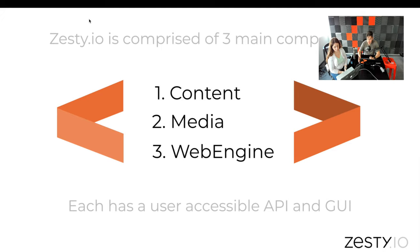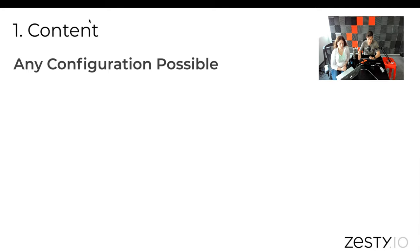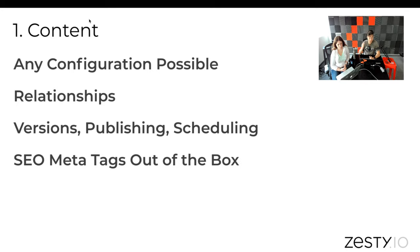Each of these has an accessible API to developers and a graphical user interface accessible to anybody. Starting with content: any configuration is possible — you can build product content, team content, general web page content, in-game content, et cetera. There's no limit; it's like an open canvas. When you create content, you can set up relationships: team members can be part of a team, products can be part of a category, articles can be tagged. All content has versioning; you can publish it and schedule when to publish. SEO meta tags are out of the box, making it a little different from other CMSs — we're really geared towards distributing over search engines.